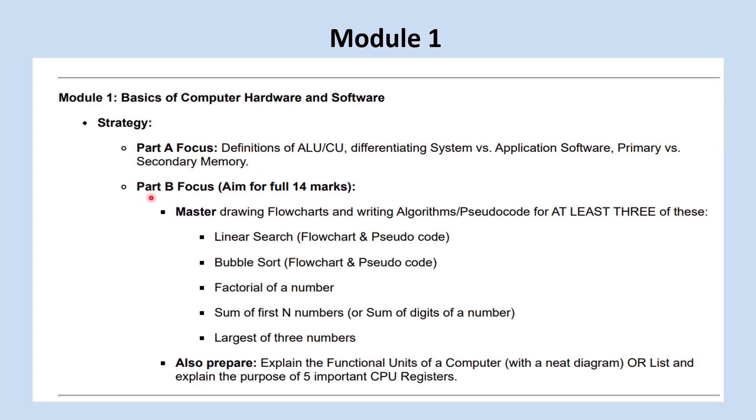Then part B, aim for full 40 marks. For part B, you have to master the drawing of flowcharts, writing algorithms and pseudocode. For at least 3 of these programs, learn how to draw the flowchart, algorithm, and pseudocode.